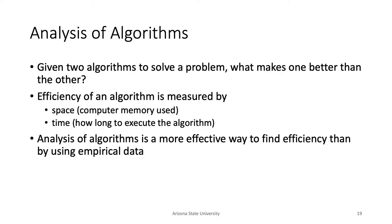You may be wondering: given bubble sort and selection sort, or any two algorithms solving the same problem, which should you use? There are different trade-offs. Rarely is one always better in every possible case. We saw this with linear versus binary search: for short lists, linear search can be faster; for long lists, binary search was way faster.